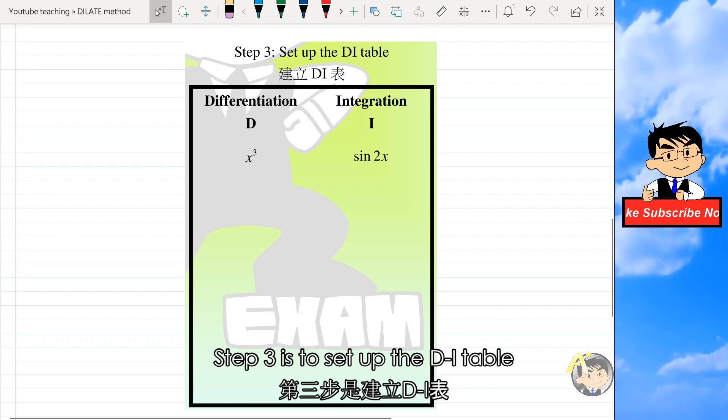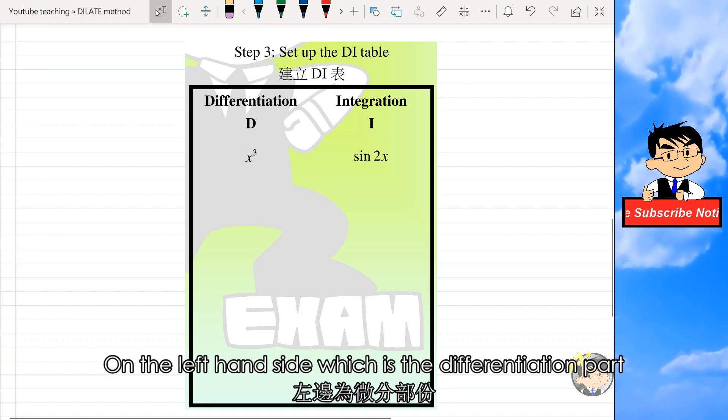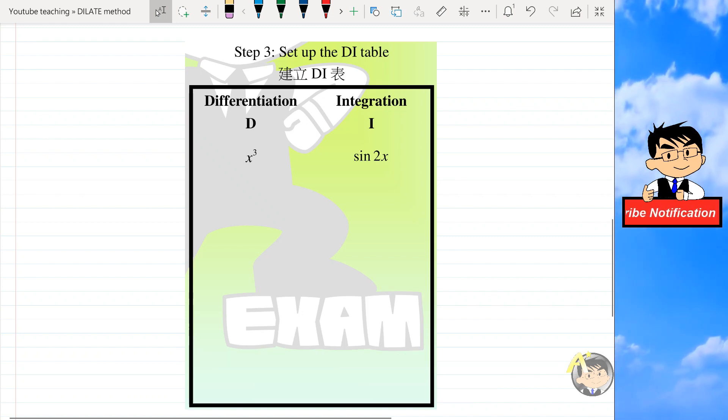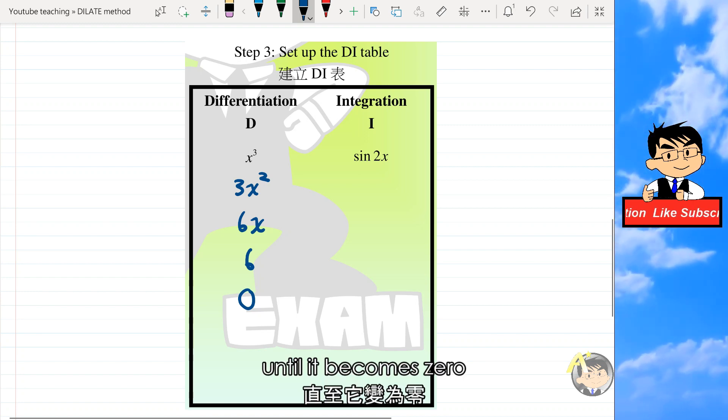Step three is to set up the DI table. On the left-hand side, which is the differentiation part, we continue to differentiate x cubed until it becomes zero.